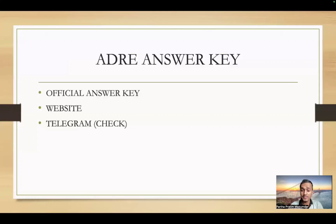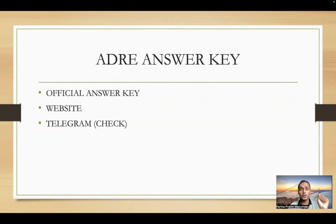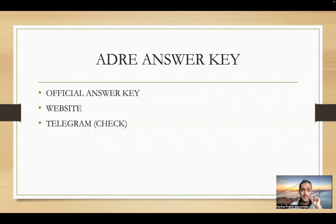First, check whether the official answer key has been released. Check our official website and Telegram channel to verify your marks. Now, importantly, if a student marks a wrong answer, 0.25 negative marks apply. So a wrong answer costs 1.25 marks total (1 mark lost plus 0.25 penalty). Similarly, for a 2-mark question, the negative marking is 0.5, so a wrong answer costs 2.5 marks total.